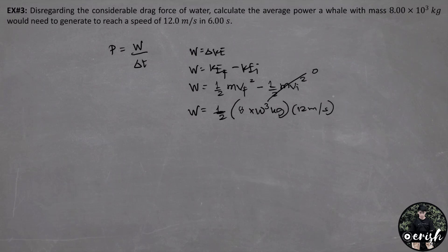That's what the whale reached after 6 seconds. This quantity is squared. And by calculating, we have the work or the change in kinetic energy 5.76 times 10 raised to 5 joules.